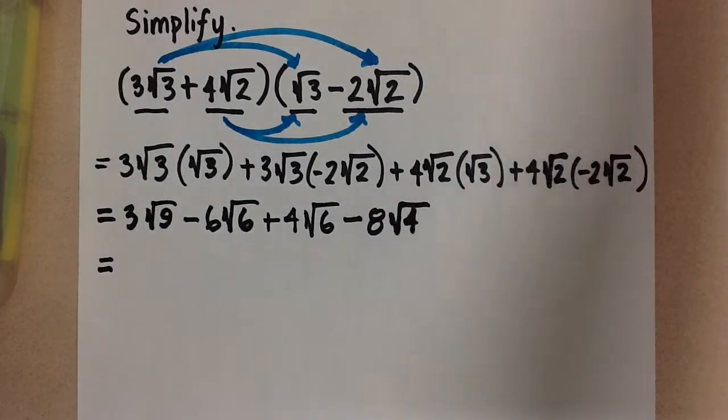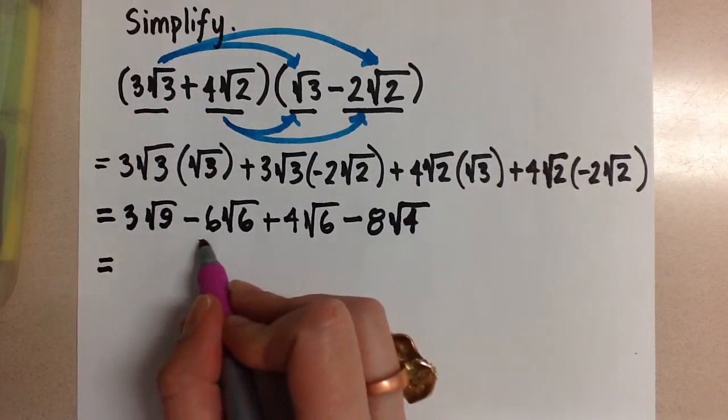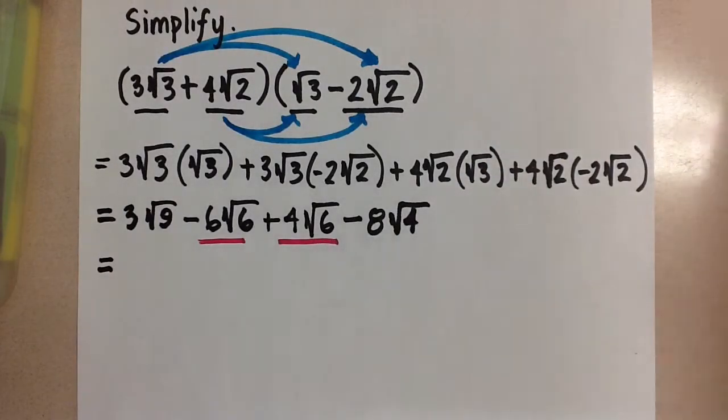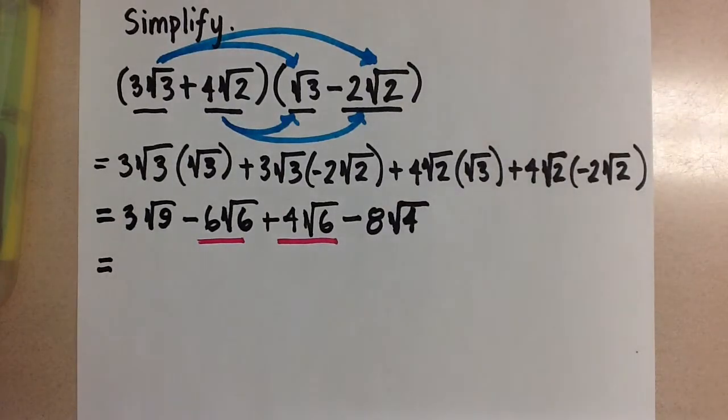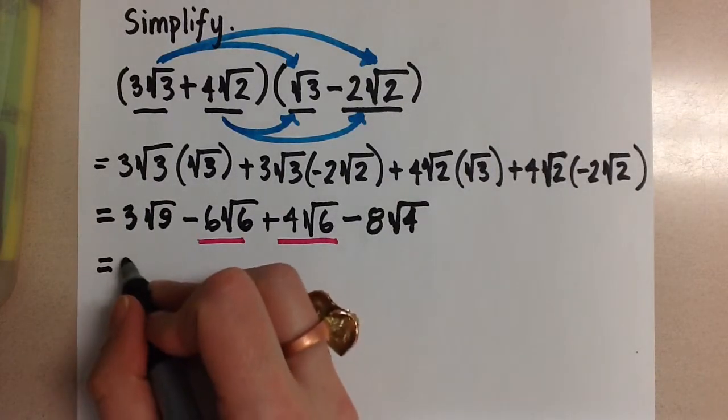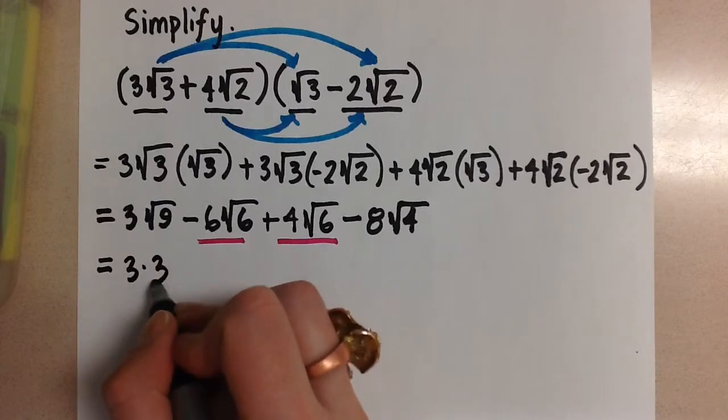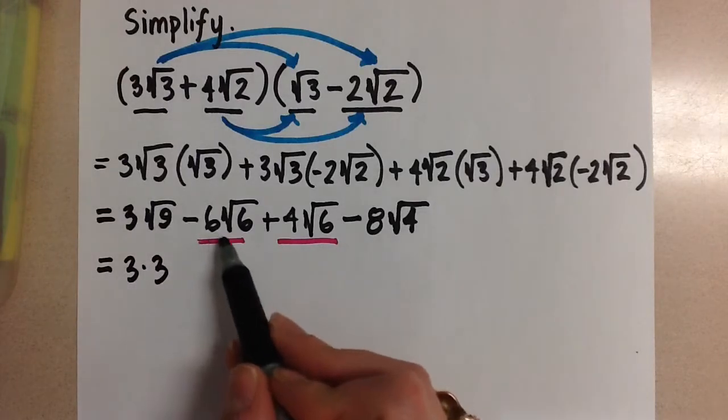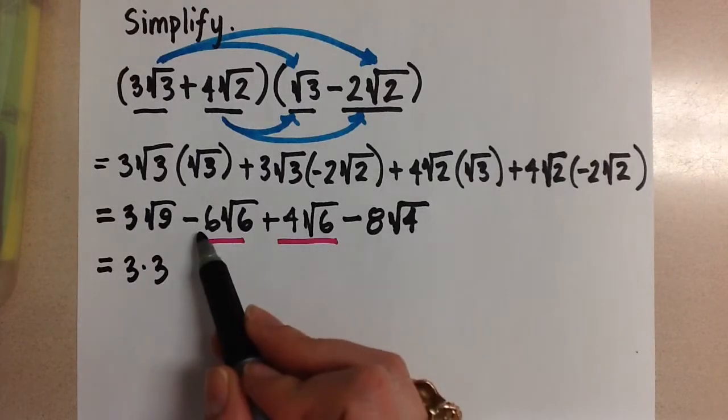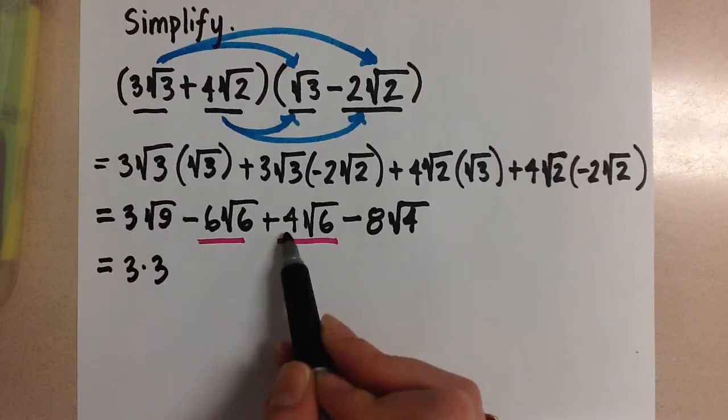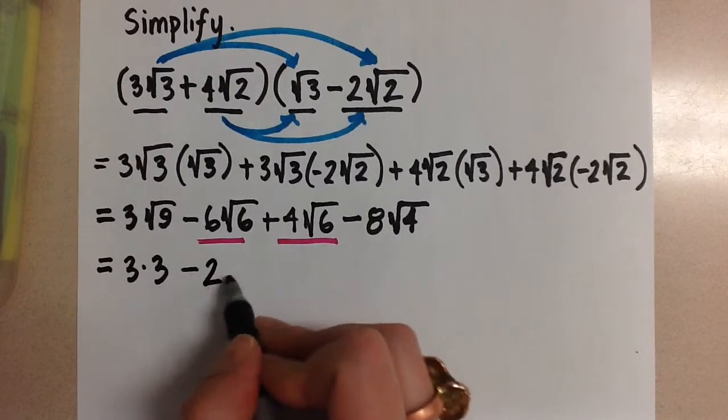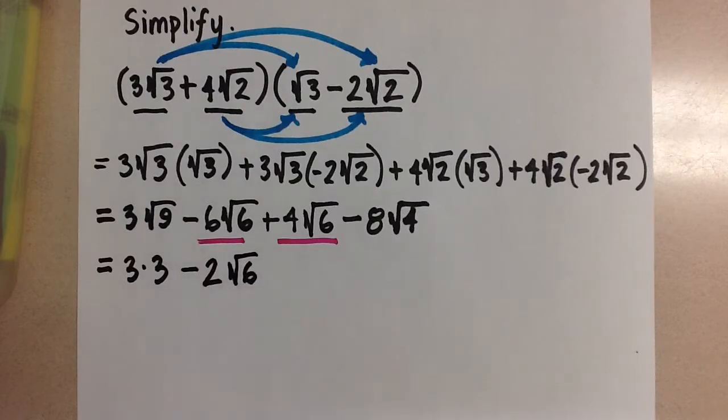And then our middle two terms, these are like radicals so we can combine those together. So when we do that we are going to end up with 3 times 3. When we combine the middle two terms I have minus 6 plus 4. This is going to give me minus 2 root 6 when I combine them.